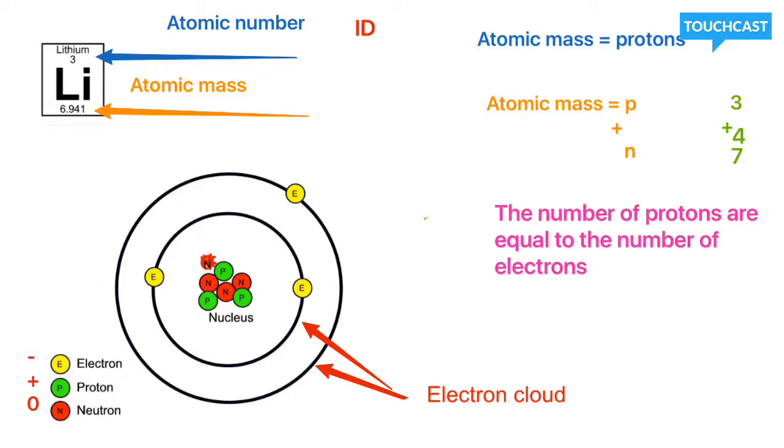Our atomic number basically determines the identity of the element, and it is the number of protons. The atomic mass is the weight of an atom, and it's going to be our protons and our neutrons added together, because protons and neutrons are the only subatomic particle with mass.